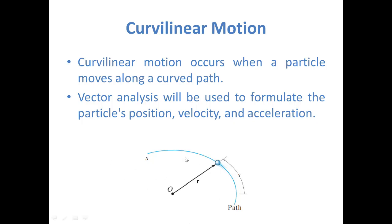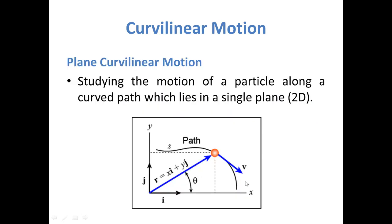You can see here a path S is followed by a ball or a particle having an origin of O. In plane motion, we study the motion of a particle along a curved path which lies in a single plane. In this, x and y coordinates are used — i is the direction in the x direction and j is in the y direction.